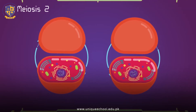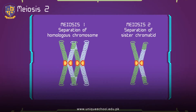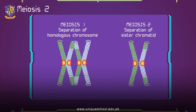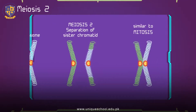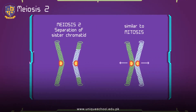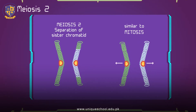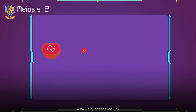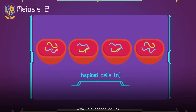Meiosis II is the second meiotic division, and usually involves equational segregation, or separation, of sister chromatids. Mechanically, the process is similar to mitosis, though its genetic results are fundamentally different. The end result of Meiosis II is production of four haploid cells — n chromosomes, 23 in humans.